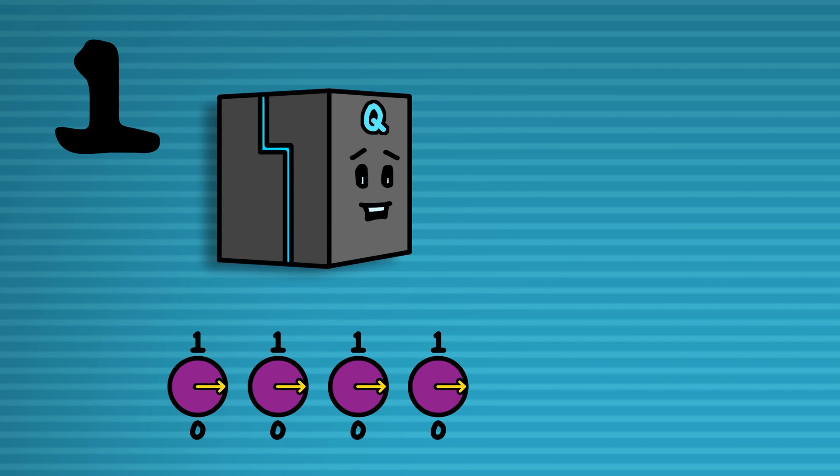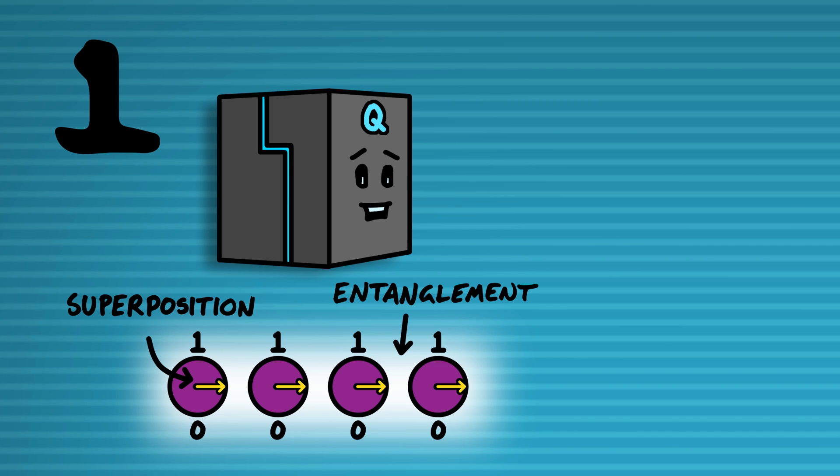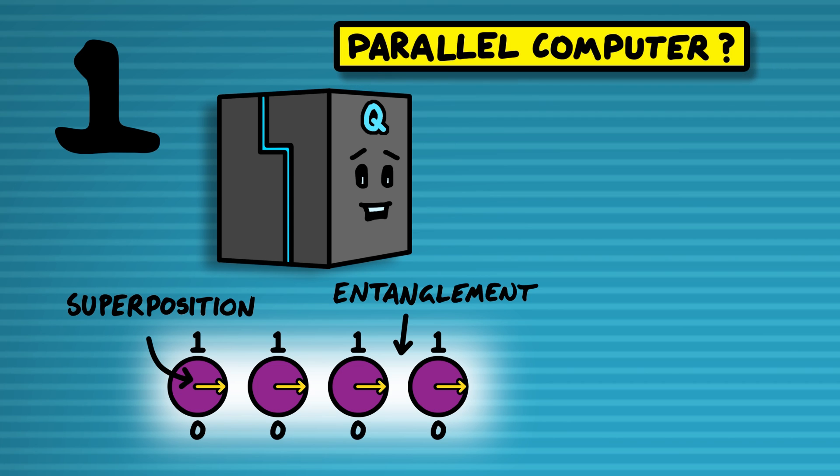A standard description of quantum computing normally goes something like this: quantum computers are made of qubits which can be in a state of zero and one at the same time. All of the qubits are then entangled so they're all treated as a single object that's in many different states at the same time. Therefore a quantum computer is like an infinitely parallel computer. And that's not quite right. It's true that quantum computers are in multiple states at the same time before you measure them, but as soon as you measure them you only get one state back.